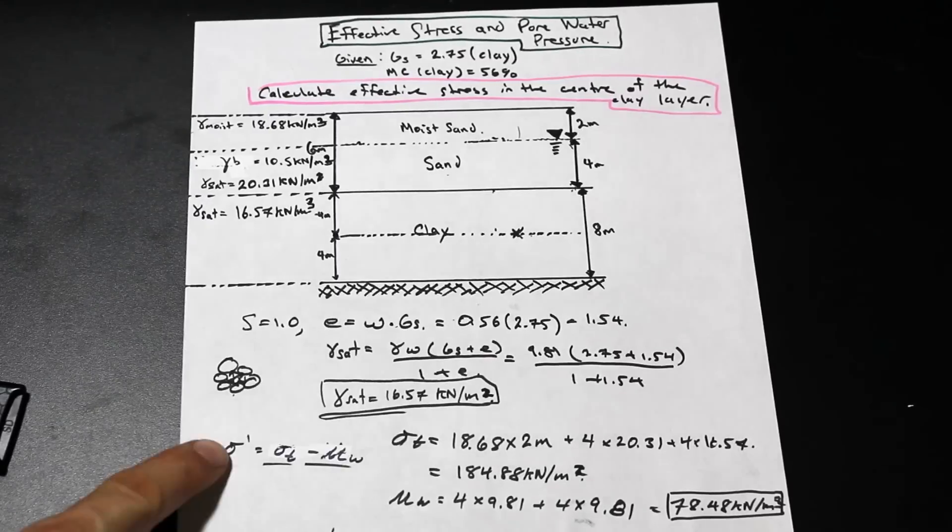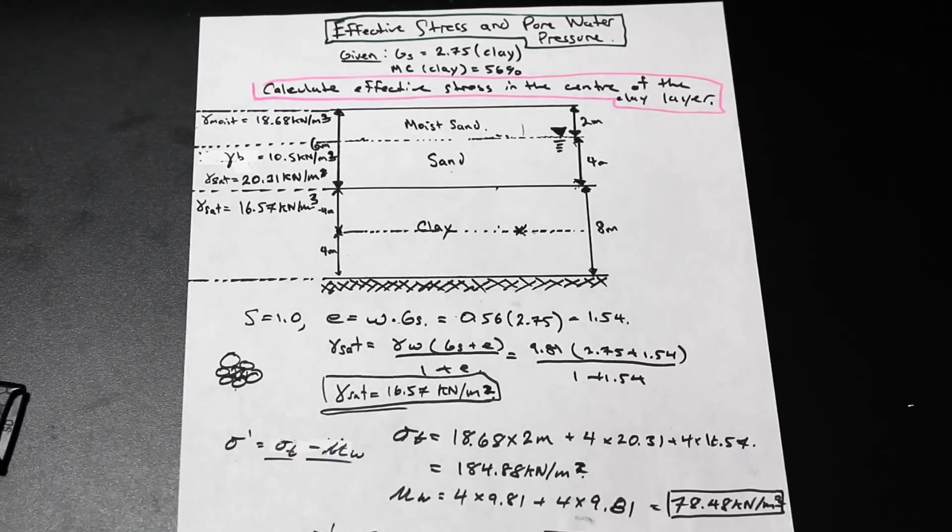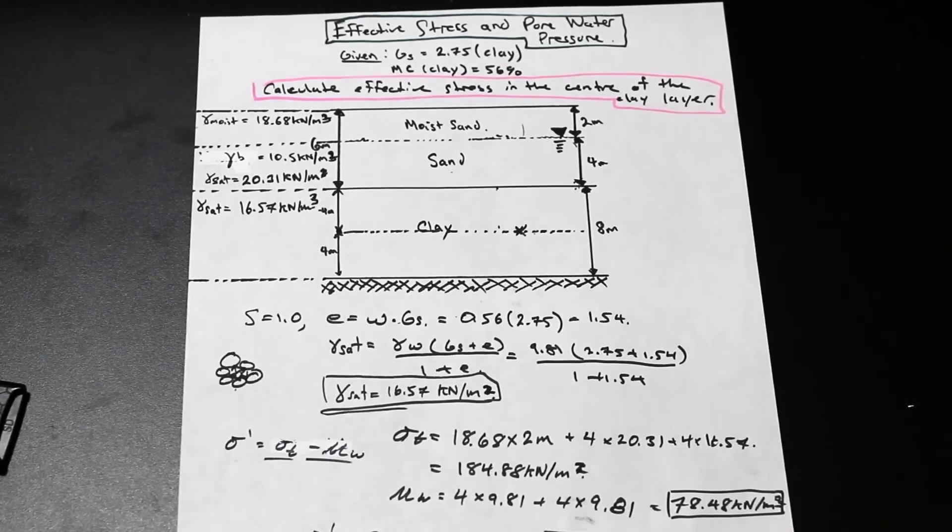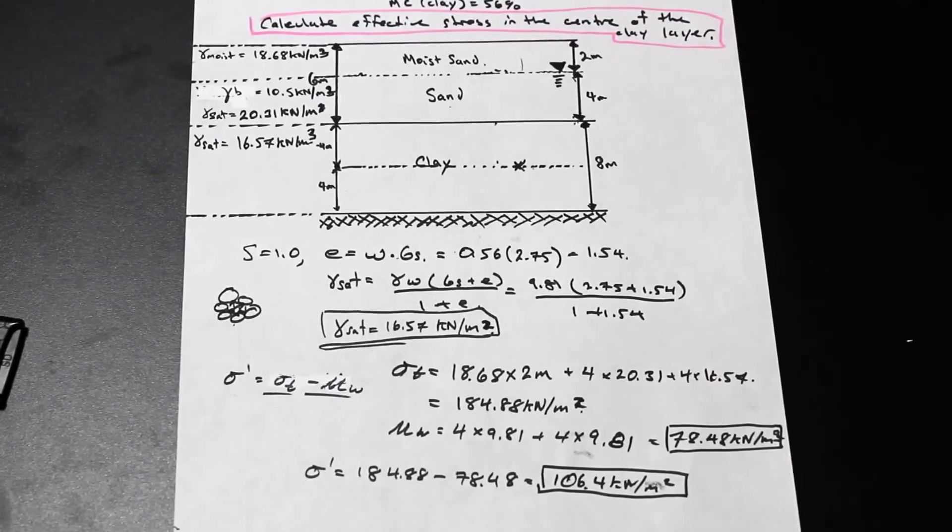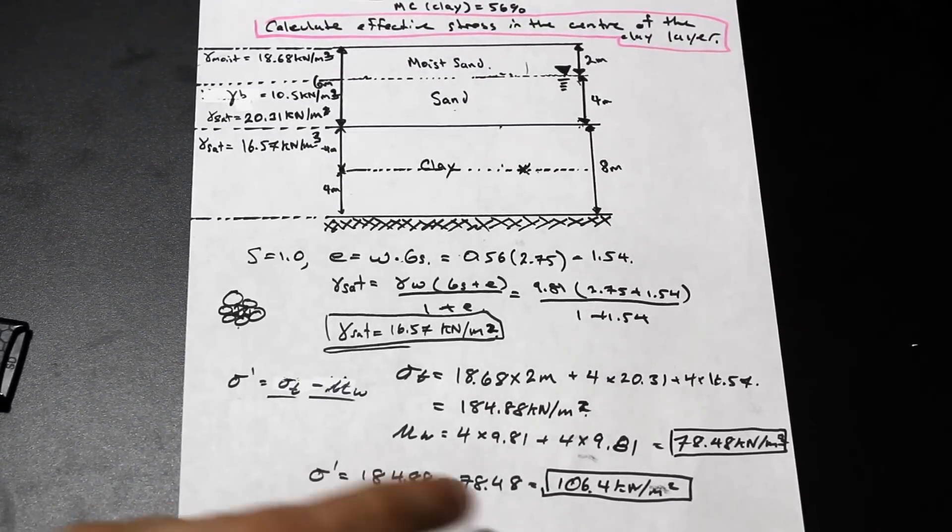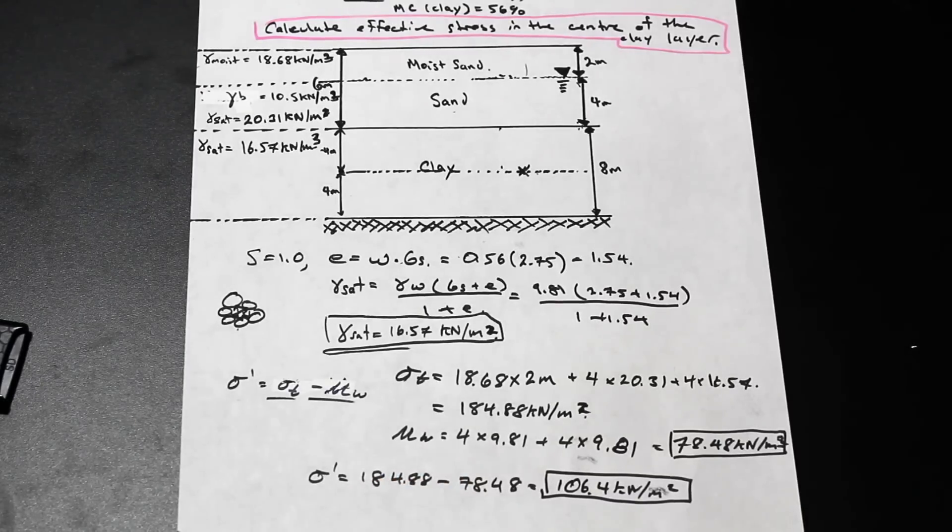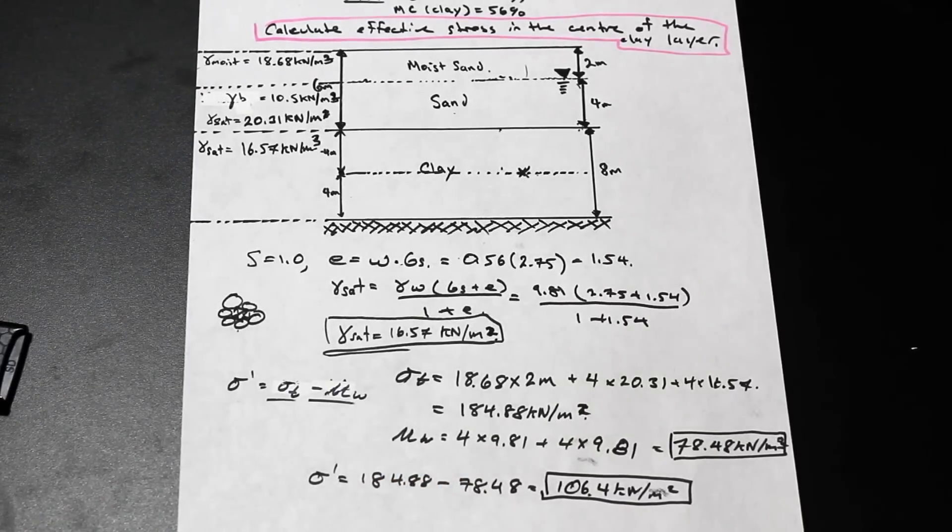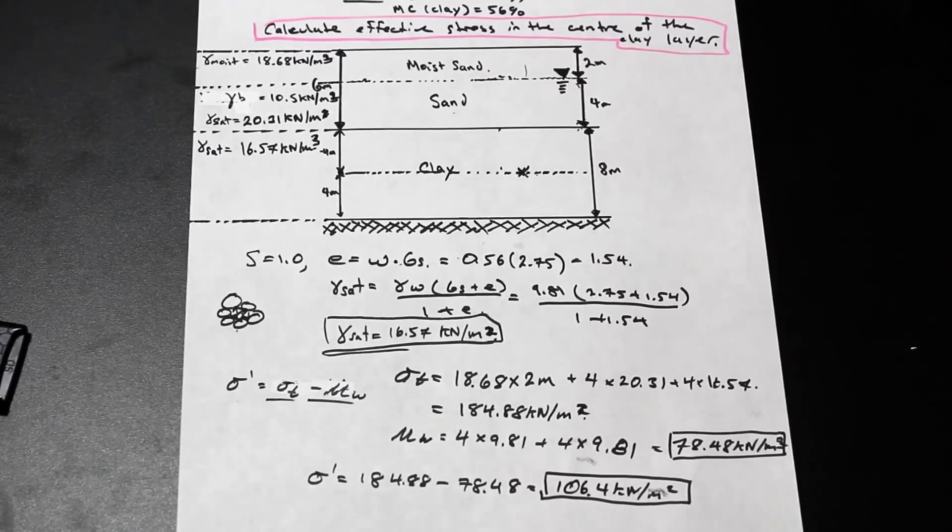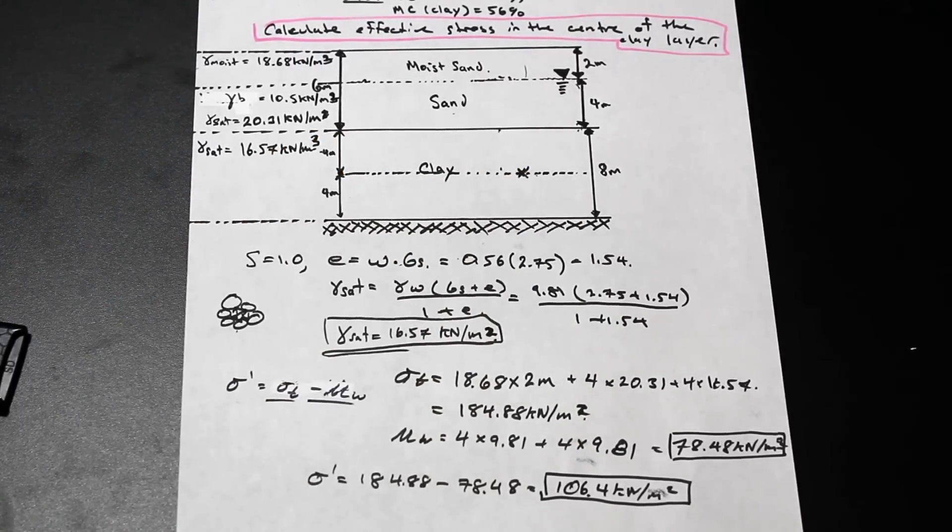And as I described before, we're just going to go ahead and apply this formula here. We're going to take the total stress and subtract it from the pore water pressure. And I'm just going to scroll down, because I've just did that calculation ahead of time. And we have 184.88 minus 78.48, 184.88 is the total stress minus the pore water pressure. And that is equal to the effective stress. So the effective stress along the clay layer, the center of the clay layer, is 106.4 kilonewton per meter squared.